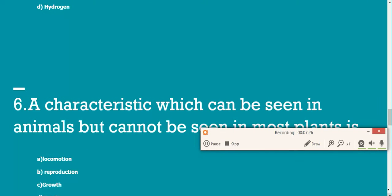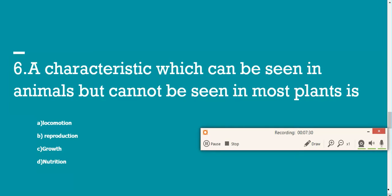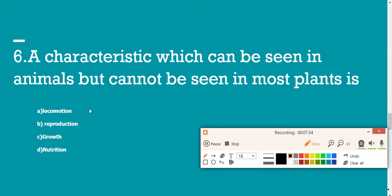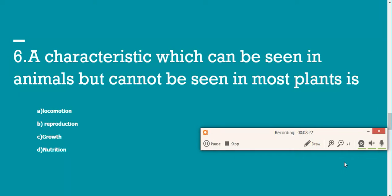Moving on to the next question, number seven. It says: characteristics which can be seen in animals but cannot be seen in most plants. You've been given locomotion, reproduction, growth, and nutrition. Both animals and plants, all of them need nutrition. They all grow up to be big trees. Reproduction - you can see through seeds or various other methods, plants also reproduce. Locomotion is your answer because most animals move, but plants they do not move, even though we categorize them under living beings. So option A was the answer for that question.